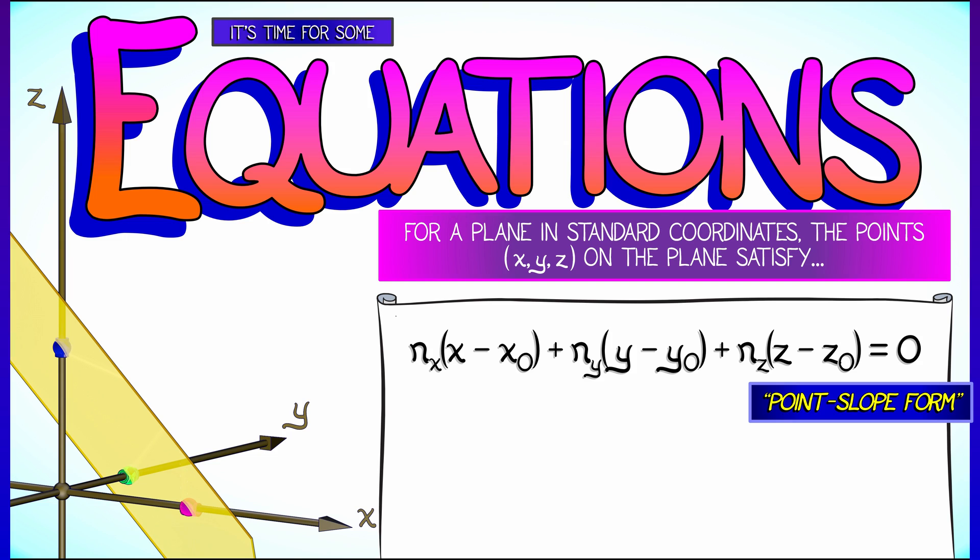Now here, these terms nx, ny, nz, these are three numbers that encode something like the slope or directionality of the plane. And this is the analog of the point-slope form of a line.